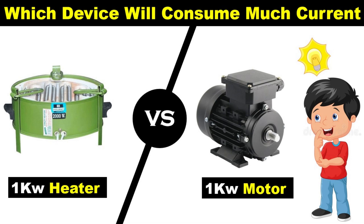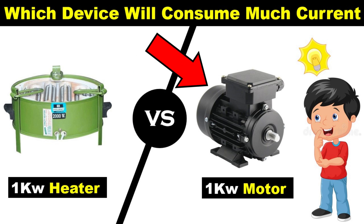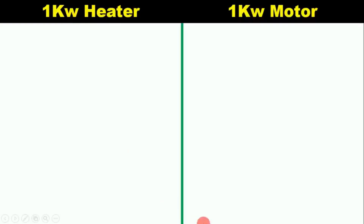Friends, if you were asked in an interview: suppose you have two equipments — first is a heater of 1 kilowatt and second is a motor of 1 kilowatt. It is asked that among these two, whose current value is higher, or is the current value of both the same? Today through this video we are going to learn whose current value is higher and how to find the value of current. So let's start — we need to find the current value of a 1 kilowatt heater and a 1 kilowatt motor.